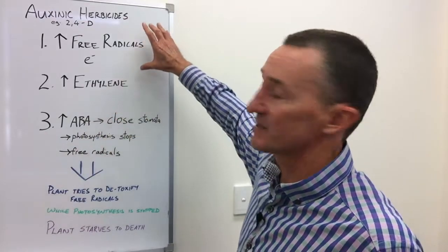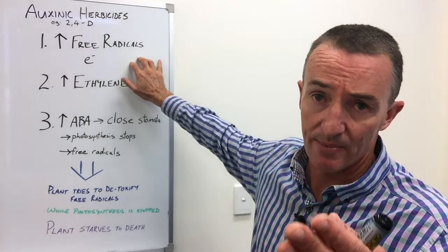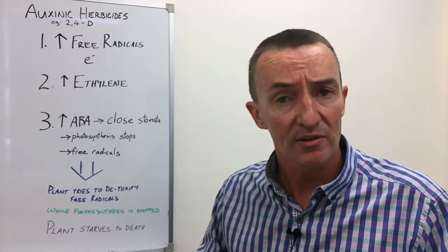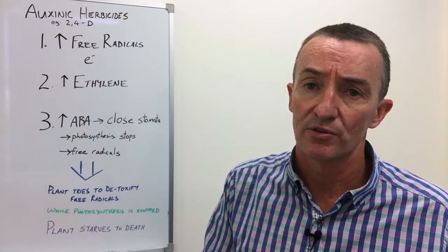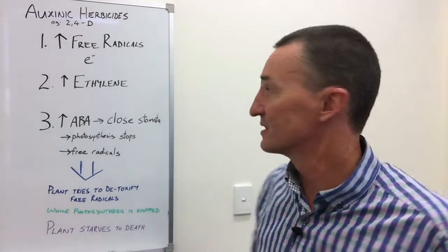Three main things happen in the cells. Firstly, free radical production goes right up. Free radicals are molecules that are unstable because they have either one electron too many or one electron too few. They're the same things that can cause cancer in humans, which is why people drink green tea.